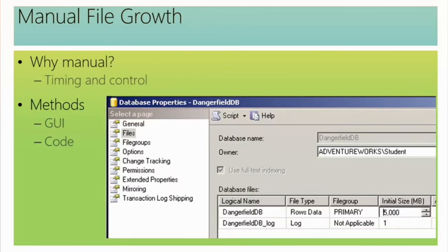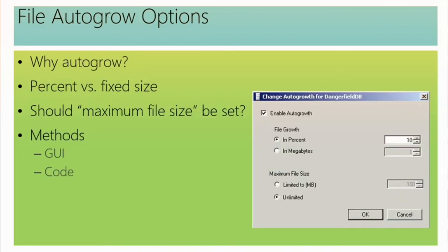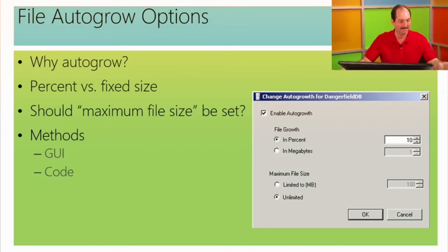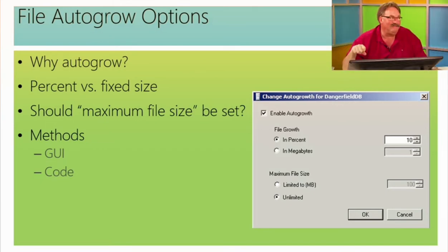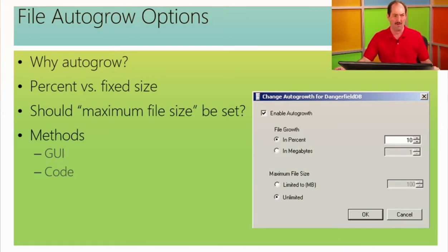If I'm aware of a space problem, I can easily solve it before it becomes a problem. I can get properties of a database, pick a particular file, and grow the size — as long as I have the disk space, that's not hard. But my rule of thumb: if I have to do something once and I'm going to have to do it again, I might as well have a code-based version of that.